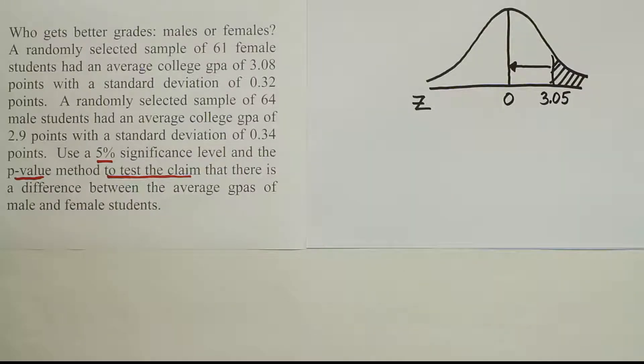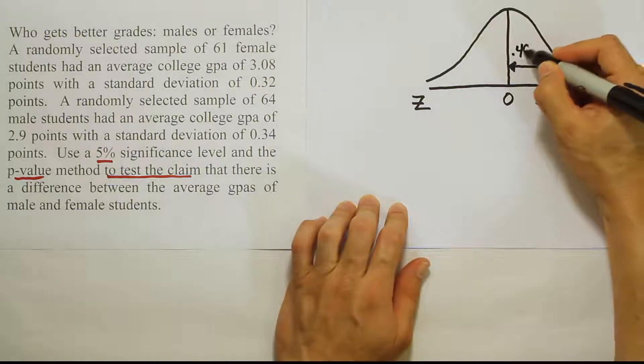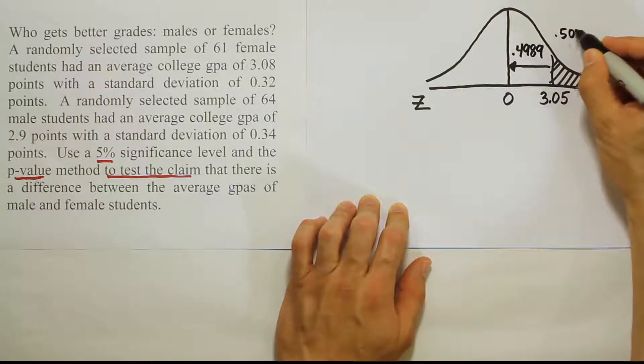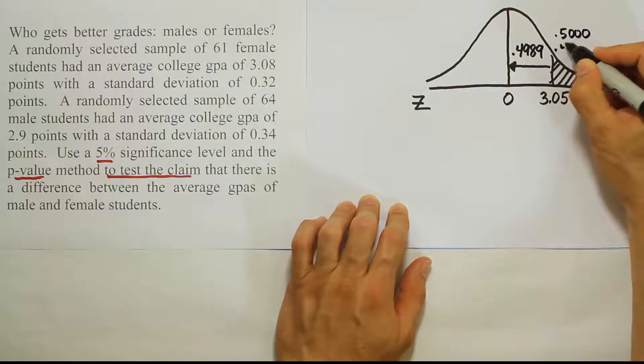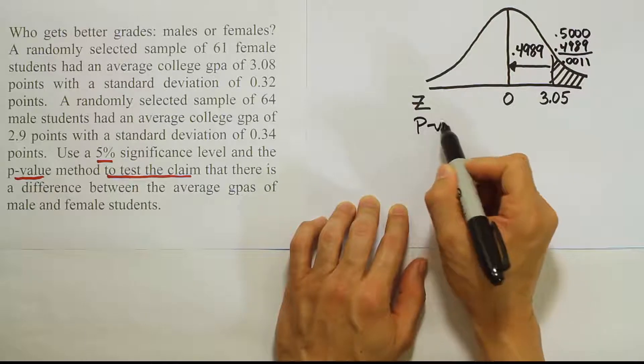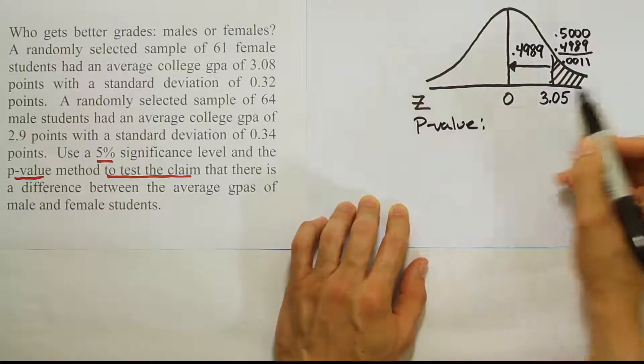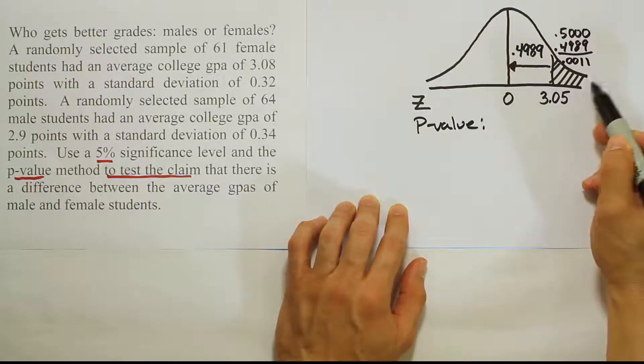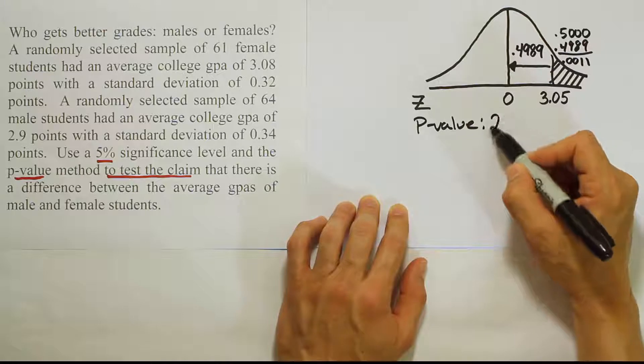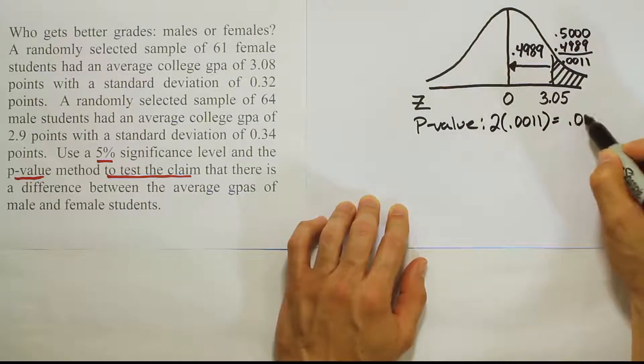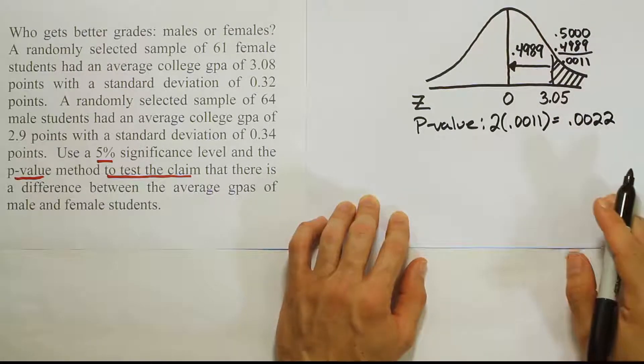From the z-chart we got the value 0.4989. And then when we subtract that number from 0.500, 0.4989 from 0.500, we get 0.0011. Now, that means that our p-value is actually twice that tail area, because remember the tail area is 0.0011, but in a two-tail test the p-value is twice that tail area. So the p-value is actually 2 times 0.0011, which is 0.0022. That's our p-value.